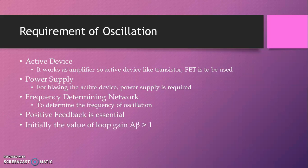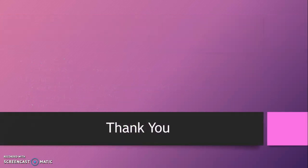Positive feedback is again one of the essential conditions. Initially, the value of loop gain A·β should be greater than 1, but once the oscillations start, the essential condition for sustained oscillations is that A·β is equal to 1. This is all about oscillators and sustained oscillations. Thank you for watching my video — keep watching, thank you very much.